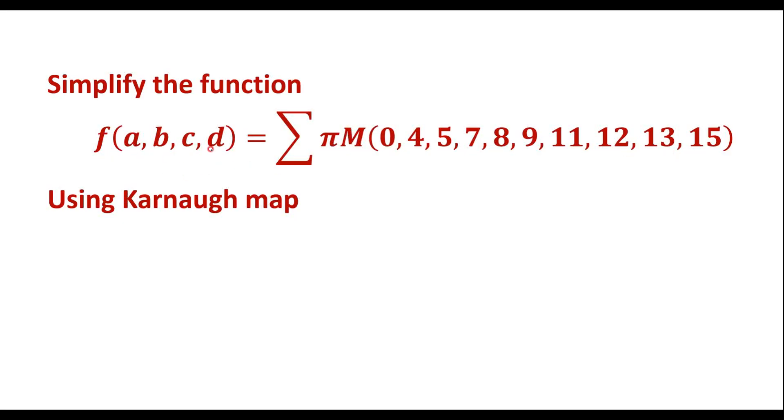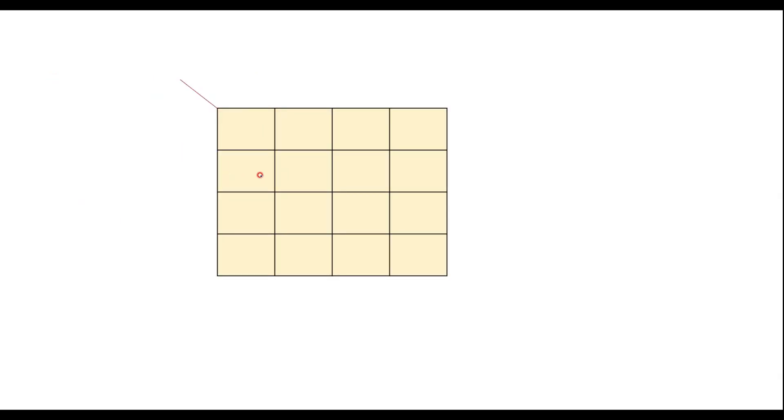So here we have 4 variables, so we should use a 4-variable K-map. So this is the 4-variable K-map. Let me use the variables a, b, c, d.